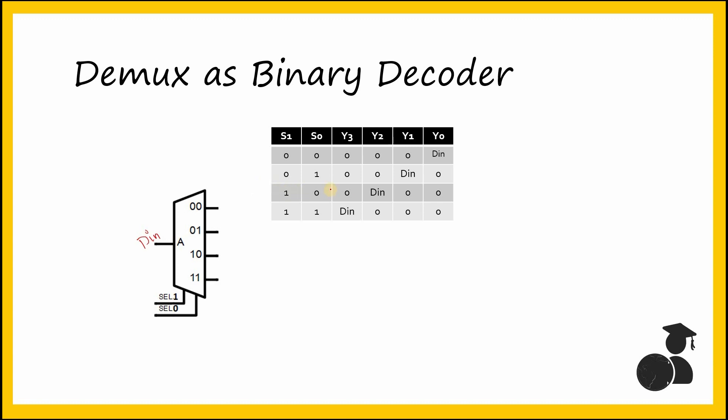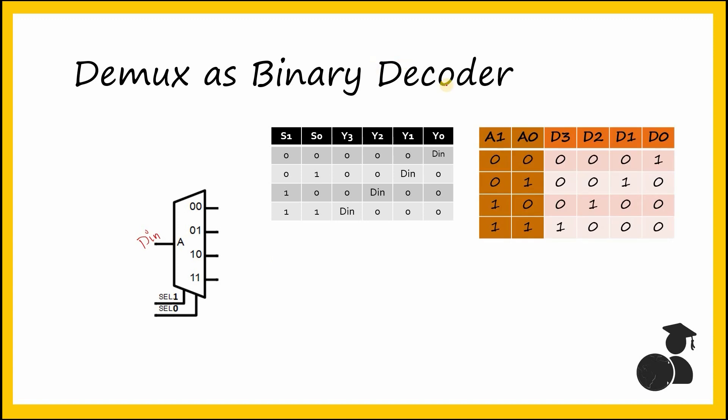When it is 10, it is sent to Y2. When it is 11, it is sent to Y3. We want to generate a 2-to-4 decoder from this. The truth table of 2-to-4 decoder is as follows.